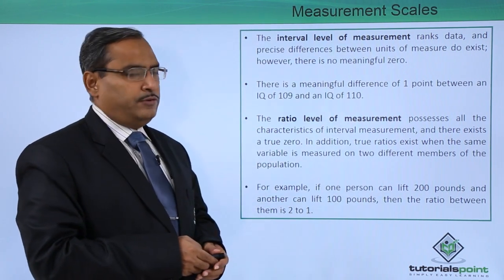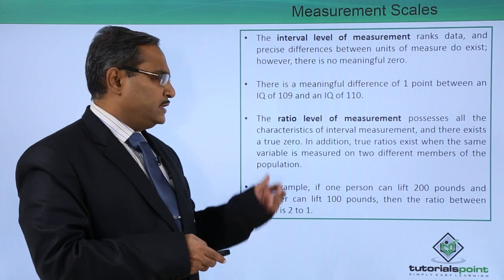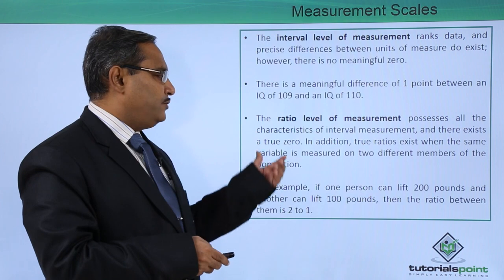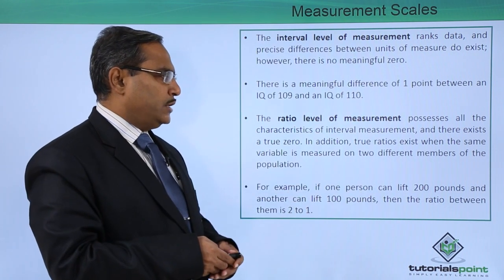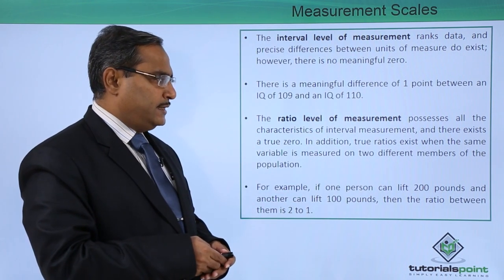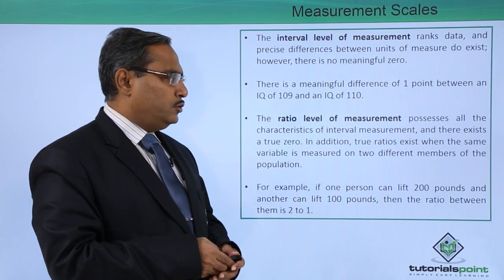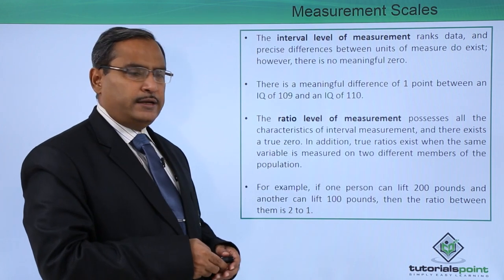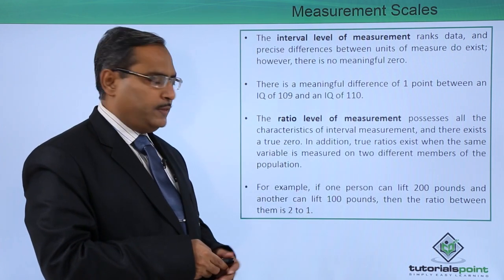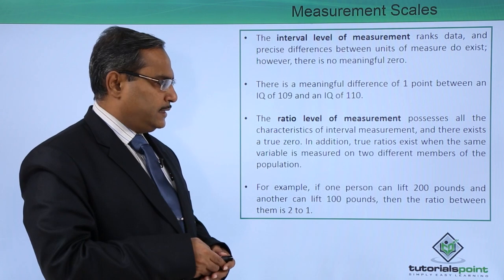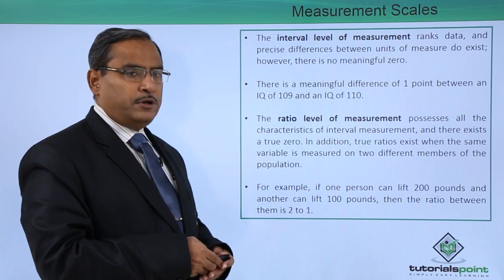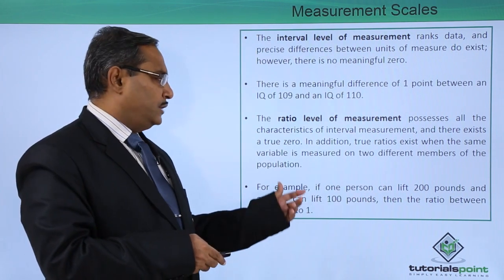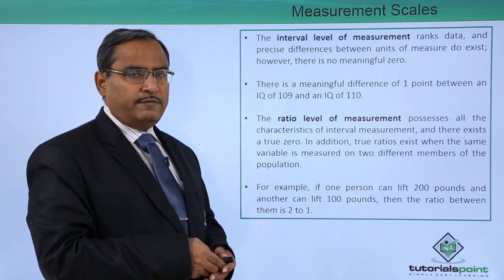The next one is the ratio level of measurement, which possesses all the characteristics of interval measurement and there exists a true zero. In addition, true ratios exist when the same variable is measured on 2 different members of the population. For example, if one person can lift 200 pounds and another can lift 100 pounds, then the ratio between them will be 2 to 1. That is known as the ratio level of measurement.